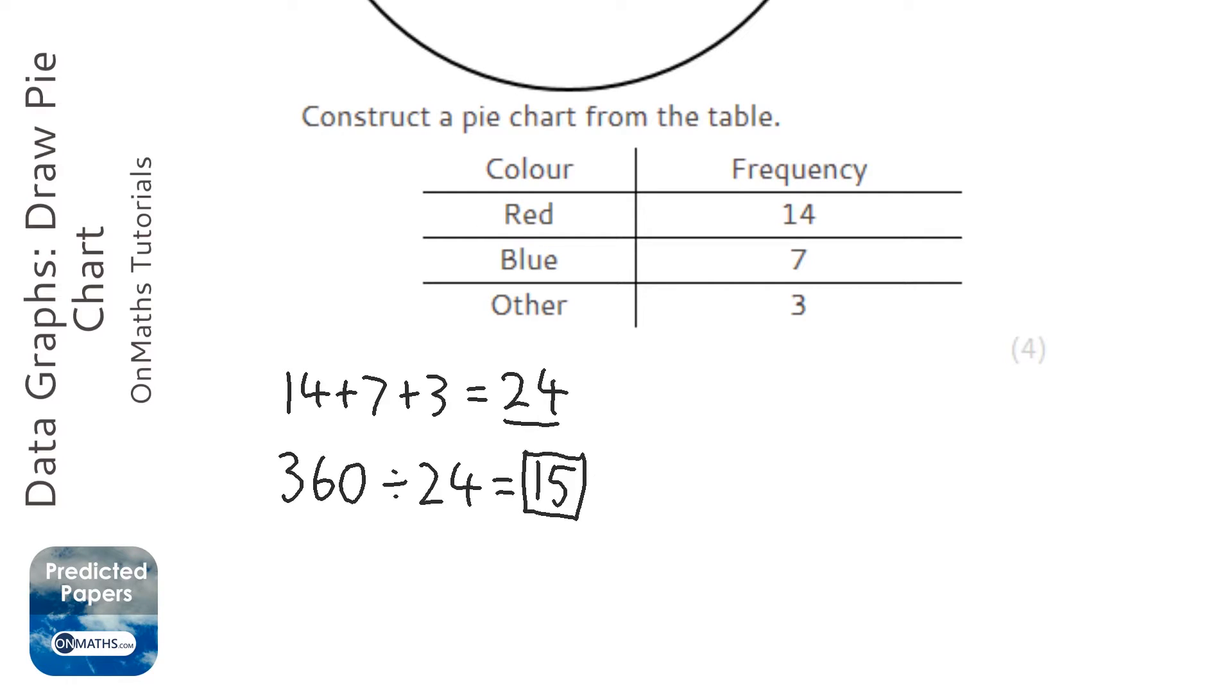So this 15 here, if we multiply all three of our numbers by 15, we will get the amount of degrees we need each colour to be. So I'm going to add an extra column here and say angle.